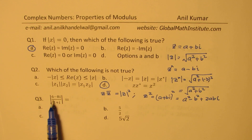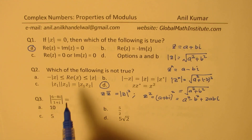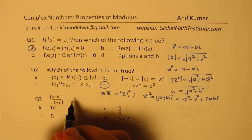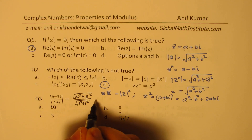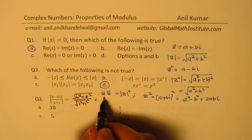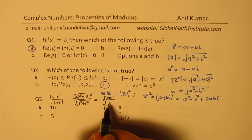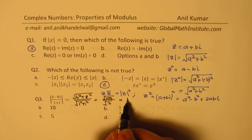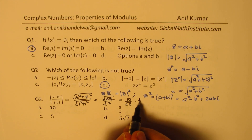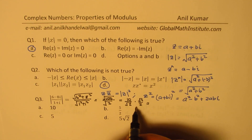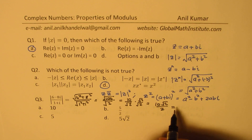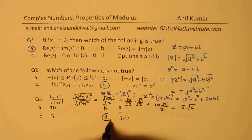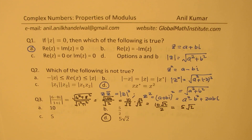Question number three: we need to evaluate the modulus of (6 minus 8i) over (1 plus i). The numerator's modulus is square root of 6 squared plus 8 squared, and the denominator's modulus is square root of 1 squared plus 1 squared. That gives square root of 100 over square root of 2, which is 10 over square root of 2. Rationalizing, we get 10 times square root of 2 over 2, which equals 5 root 2. Therefore, option D is the right option.